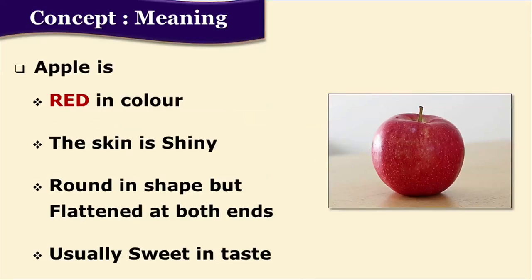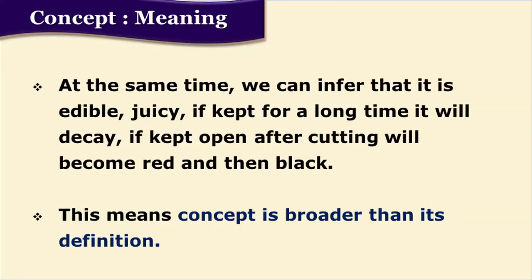For example, apple is red in colour, the skin is shiny, round in shape but flattened at both ends, and usually has a sweet taste. But at the same time we can infer that it is edible, it is juicy, and if kept for a long time it will start decaying. If we cut it and leave it exposed to the air, it will become brown and then gradually turn black. This means a concept is broader than its definition — we can have many inferences implied in that term.